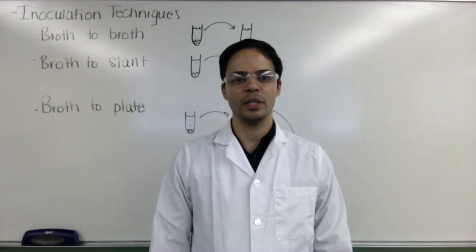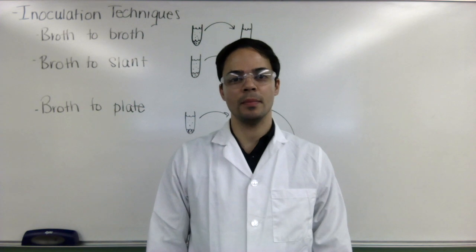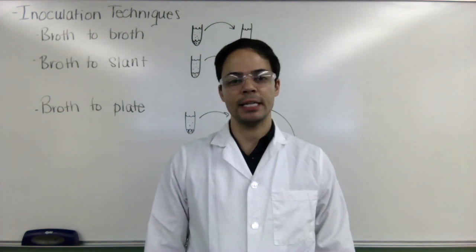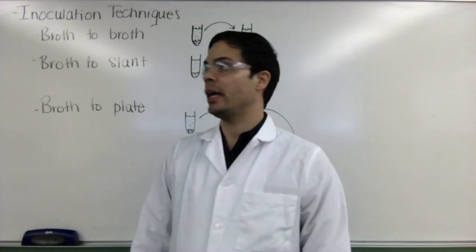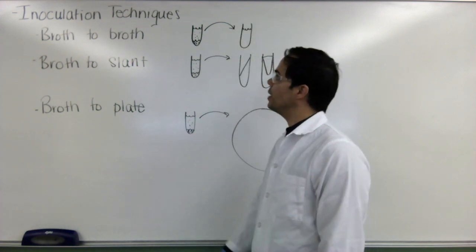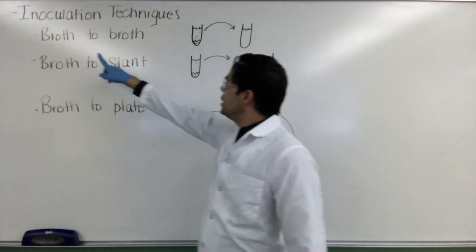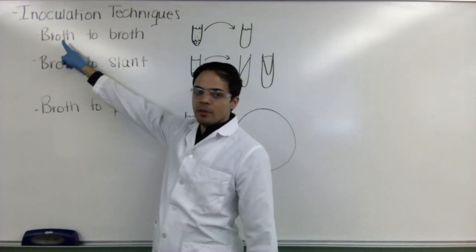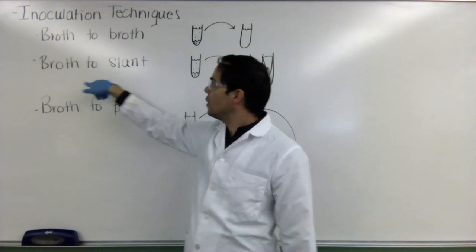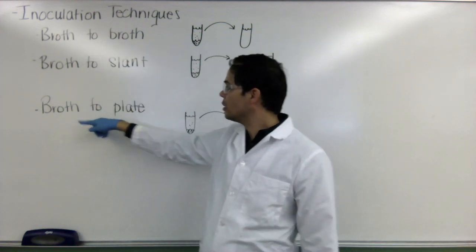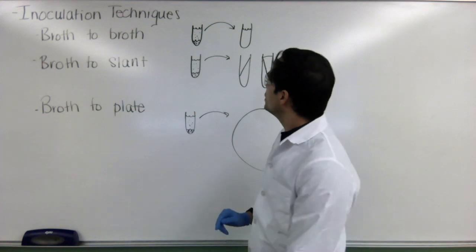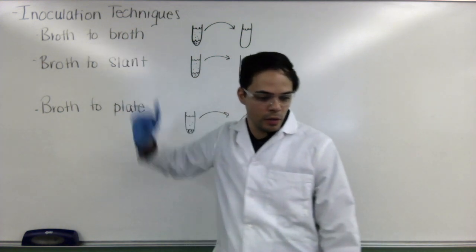Hello, students. Today we are going to be talking about various different inoculation techniques. The three specific techniques we're talking about are how to inoculate from a broth culture to a broth culture, a broth culture to a slant, and a broth culture to a plate. Let's start with the broth to broth.